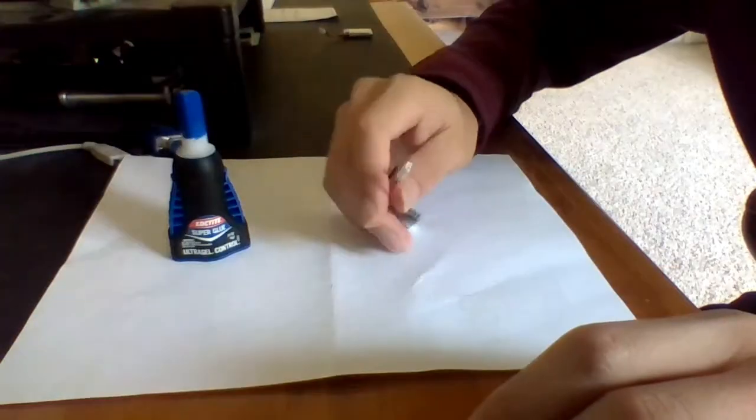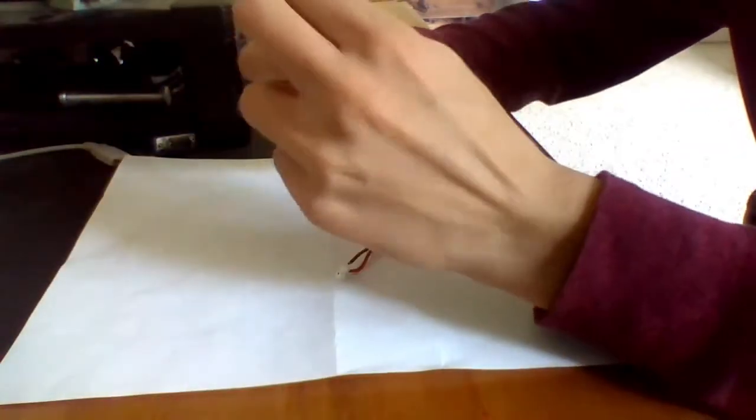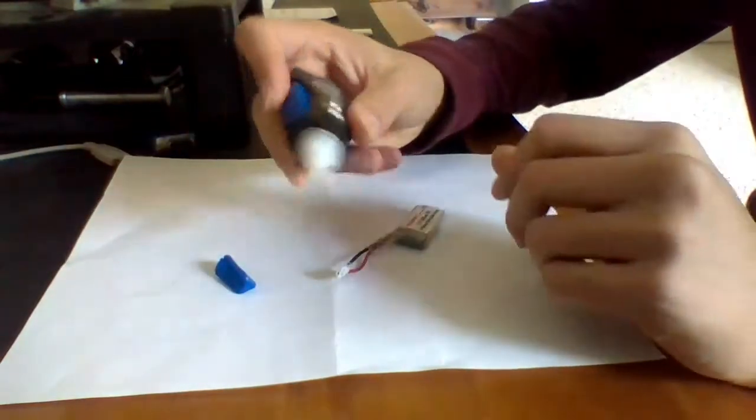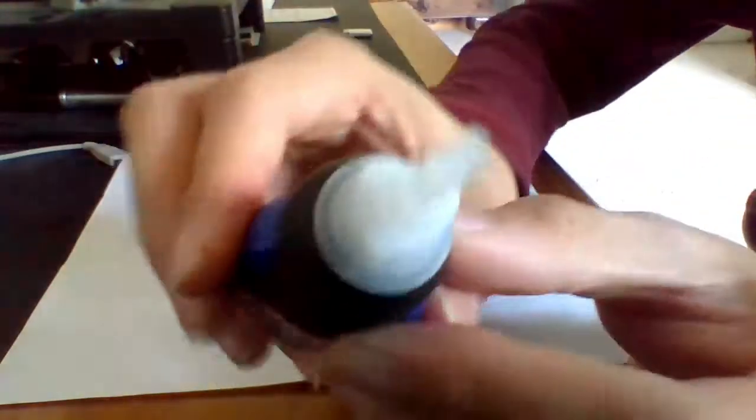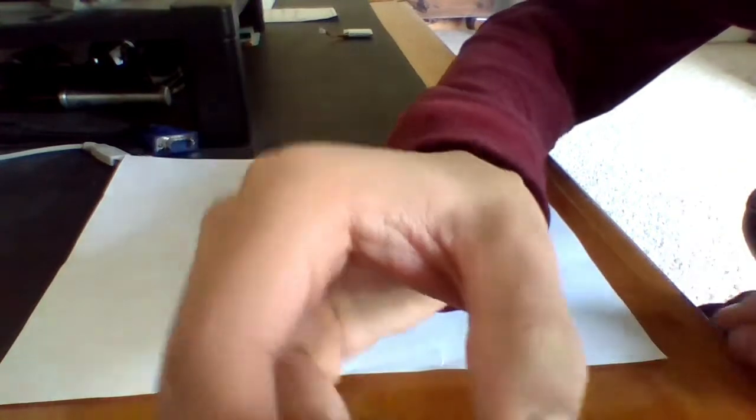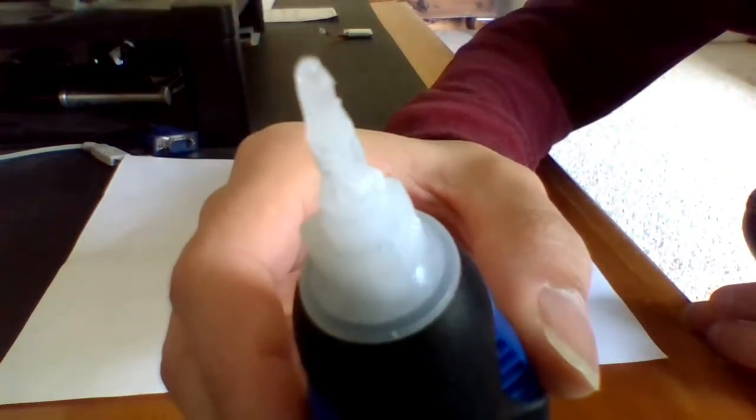Okay, so you're going to want to take your super glue off and spray it out until you see a little of it on the tip there.